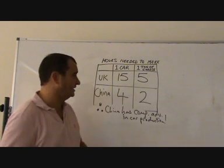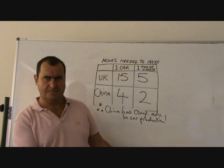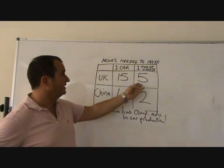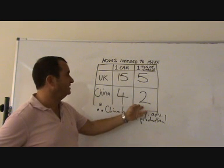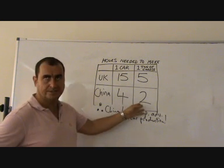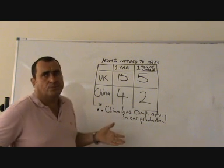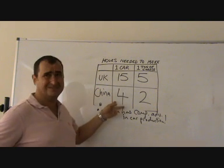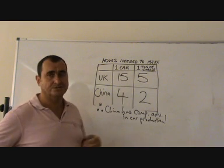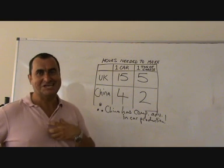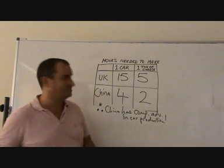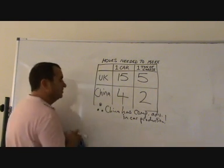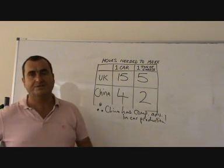If we repeat the exercise for cheese — asking how much of a car each country forgoes — the UK gives up one third of a car when making cheese, because the 5 hours needed could have made one third of a car at 15 hours each. China gives up half a car, because the 2 hours needed could have made half of a car at 4 hours each. China has the bigger opportunity cost for cheese. The UK has the lower opportunity cost, so the UK has comparative advantage in cheese production.